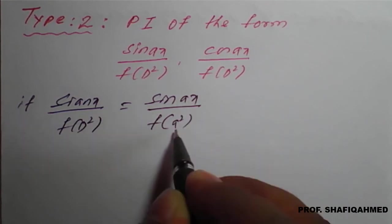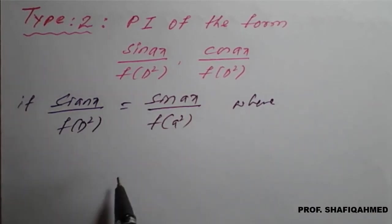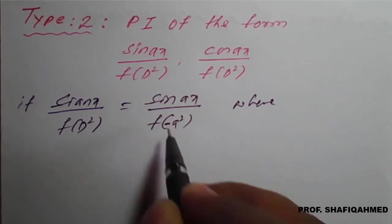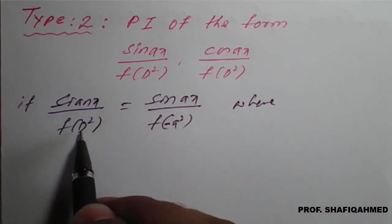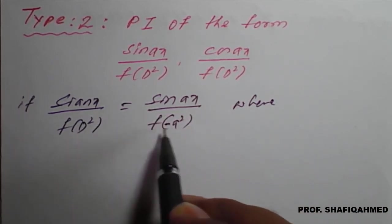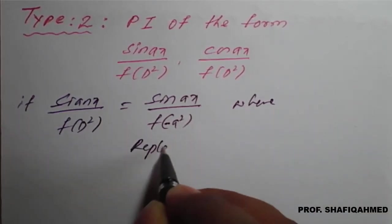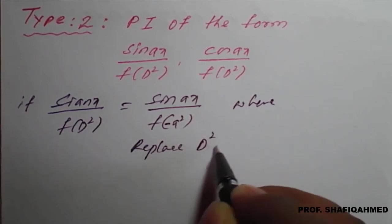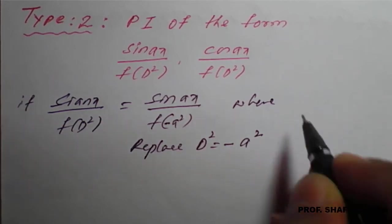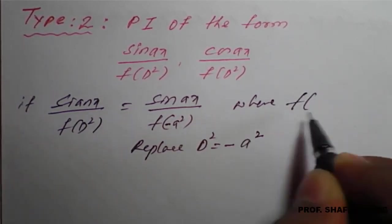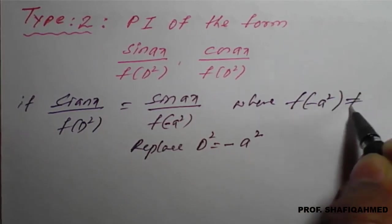Whatever value of 'a' is there, you have to square it. So D² is replaced by minus times a² — remember, it is minus times a², not minus of (a) whole square. The condition that applies here is that f of minus a² should not equal zero.